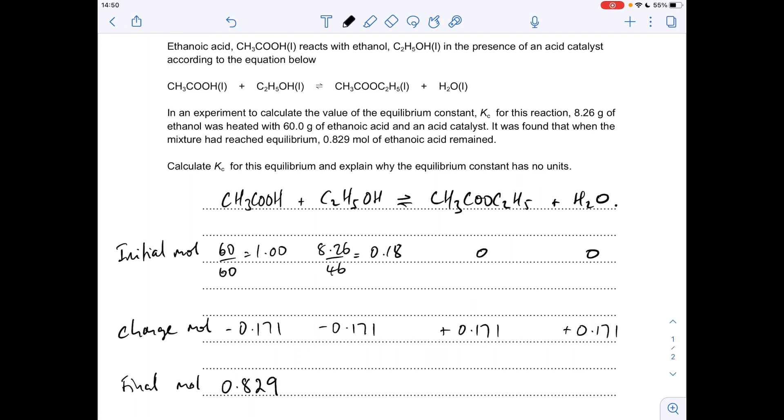All we need to do now is work out the moles of ethanol that's going to be left, so that's going to be 0.18 minus 0.171, which is 0.009, and obviously these are 0.171.